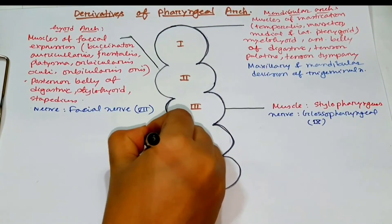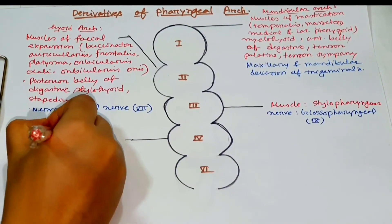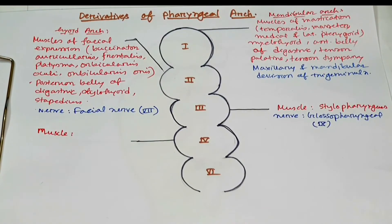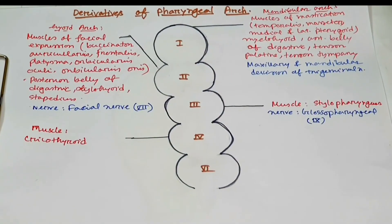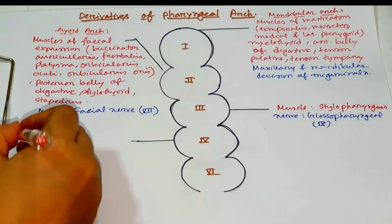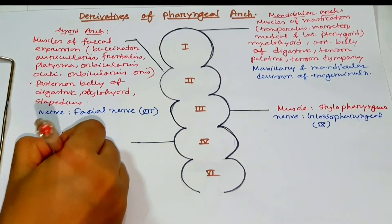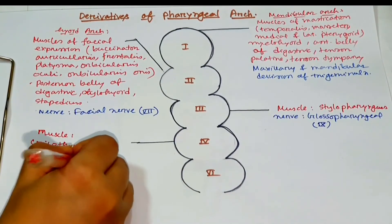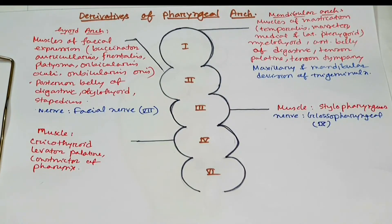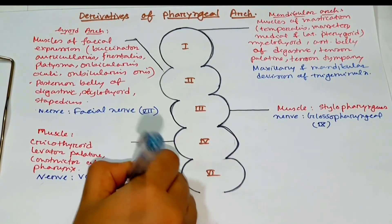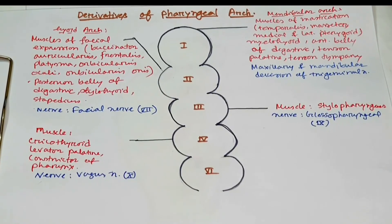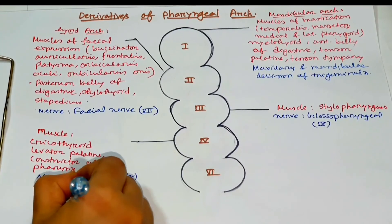From the fourth pharyngeal arch, the muscles derived are cricothyroid, levator palati, and constrictors of the pharynx. The nerve derived from the fourth arch is the superior laryngeal branch of the vagus nerve.